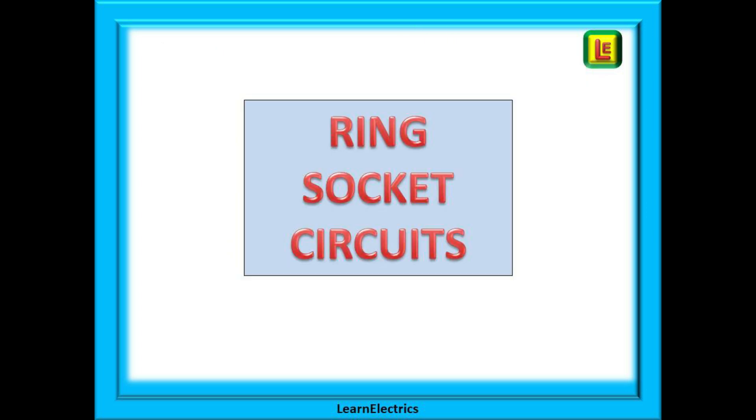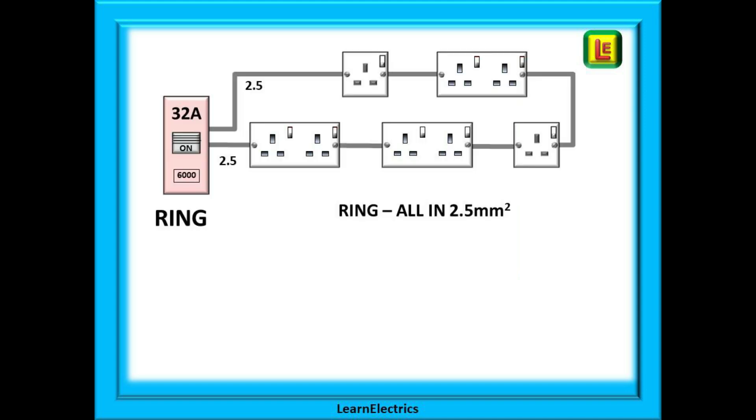Moving on to ring socket circuits we see a completely different picture. If we look at our basic ring circuit with a 32 amp breaker we see that all the cabling is in 2.5 mm twin and earth.